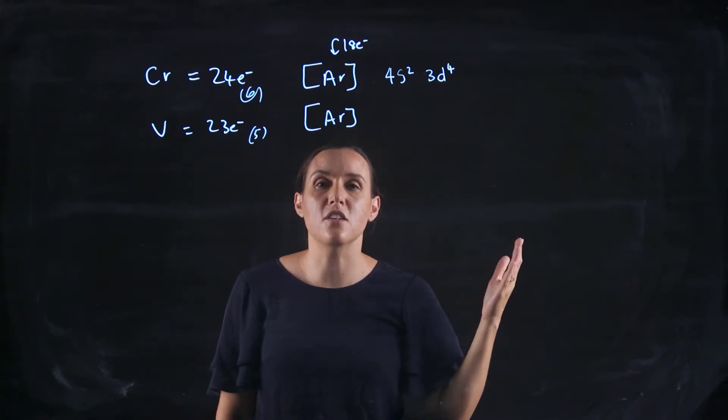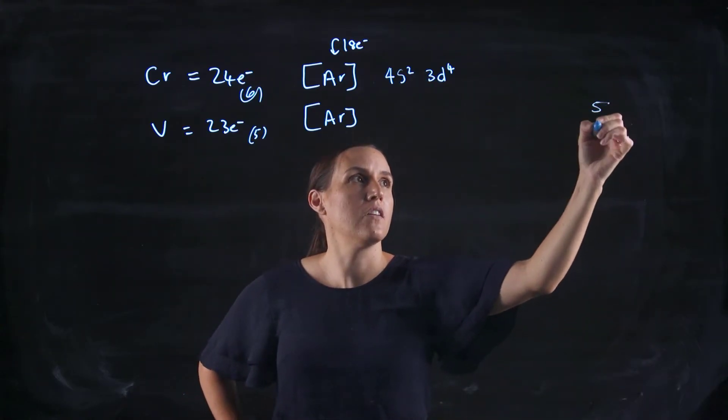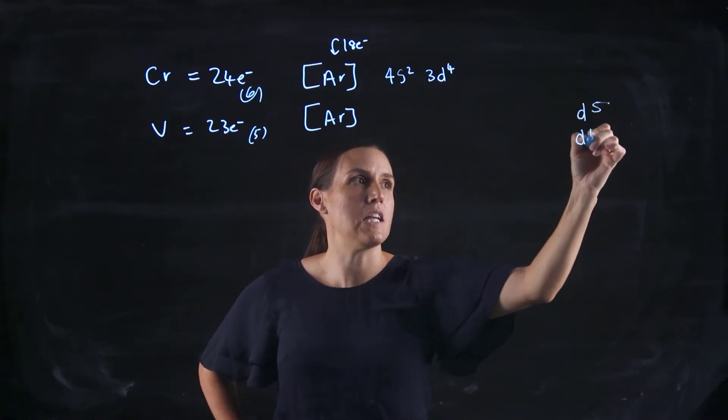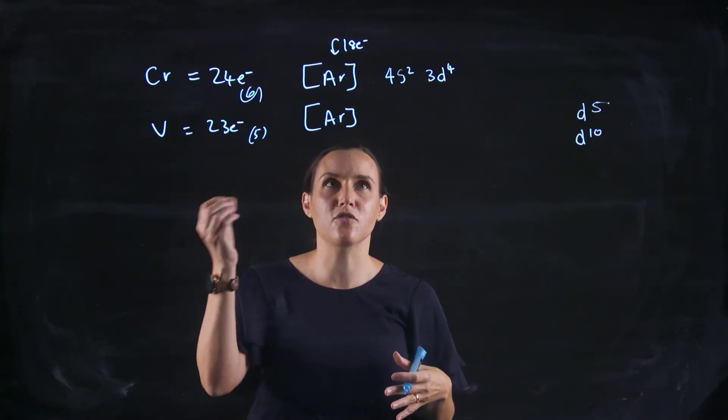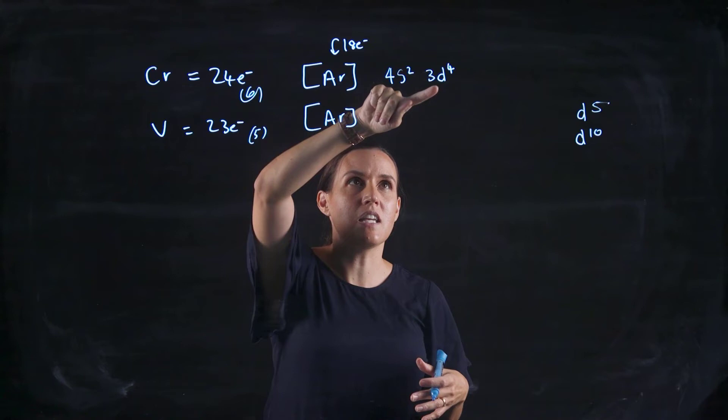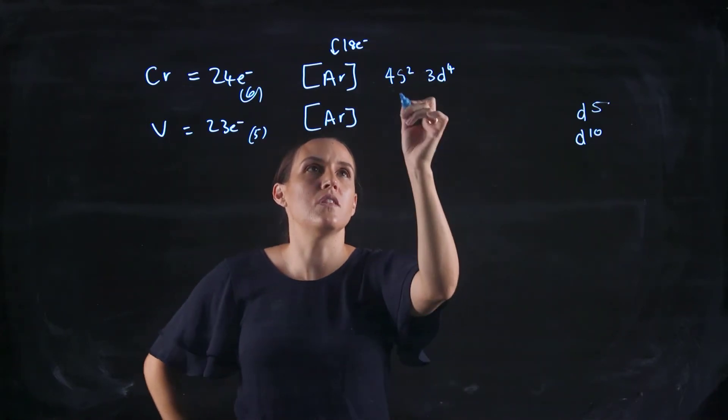So this makes the electrons be promoted from the s block up to the d block if they can reach those magic numbers. So to half fill them, because there's 5 orbitals, we would be looking at number 5, so a d5 or a d10. So if we can promote those 2s electrons up to the d and hit d5 or d10, that's what's going to happen.